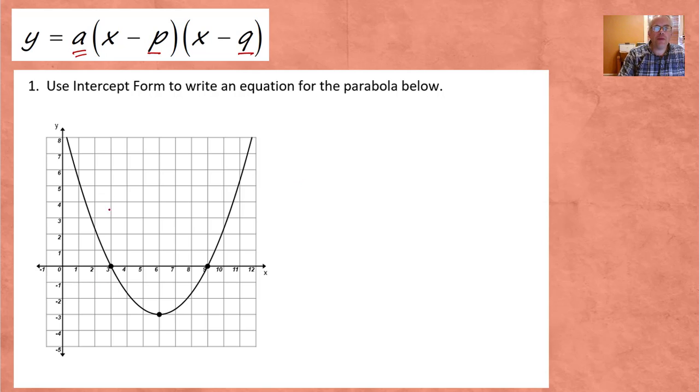We're going to write an equation for this parabola. It has two lovely intercepts right here. It has intercepts at X equals 3 and X equals 9. So we can put those in for P and Q. So let's write the equation we have so far. Y equals A, X minus 3. I'm going to put 3 in for P. That's the first intercept. Times X minus 9. That's the second intercept. We know this works, because if we put X equals 3 in, 3 minus 3 would be 0, and the whole thing would be 0. If we put 9 in for X, the second factor would be 0, and the whole equation would be equal to 0.